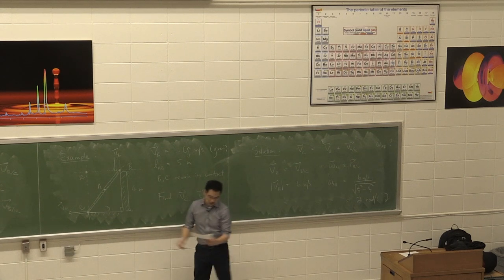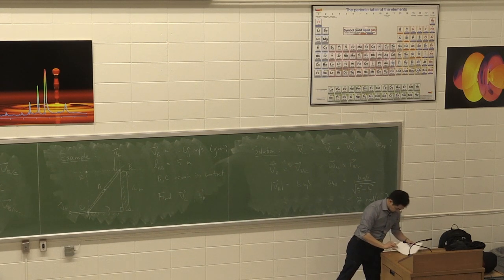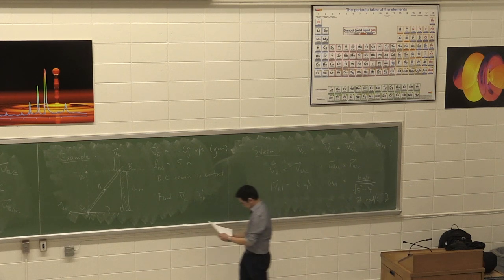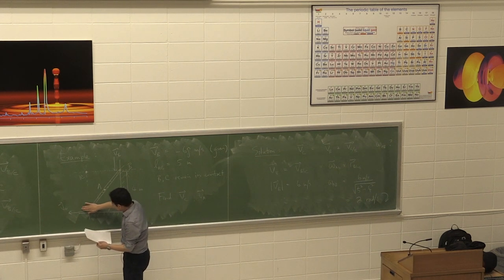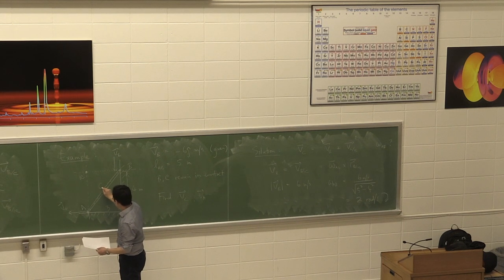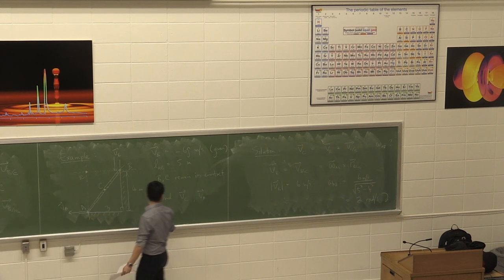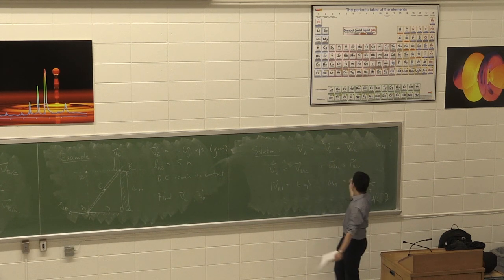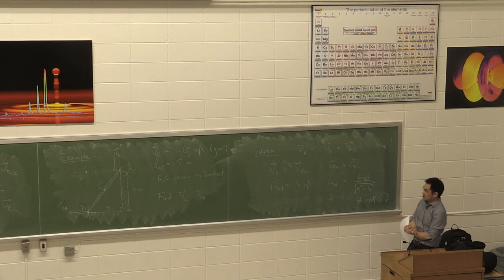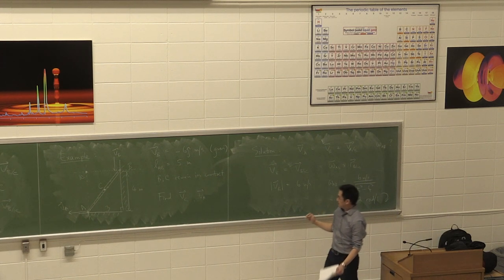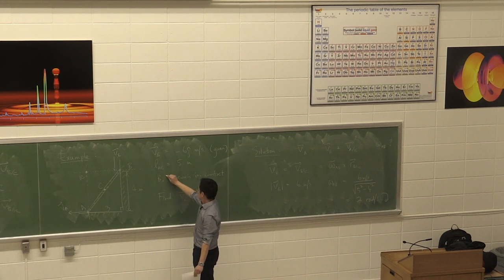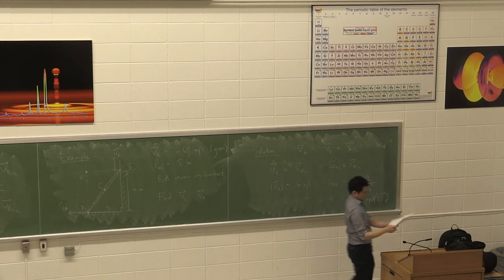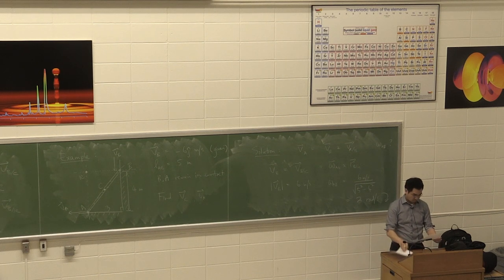Sorry — I labeled this wrong. In my notes, this is A, this is B, and this is C. This is VA. AB are the ends of the ladder. My apologies.